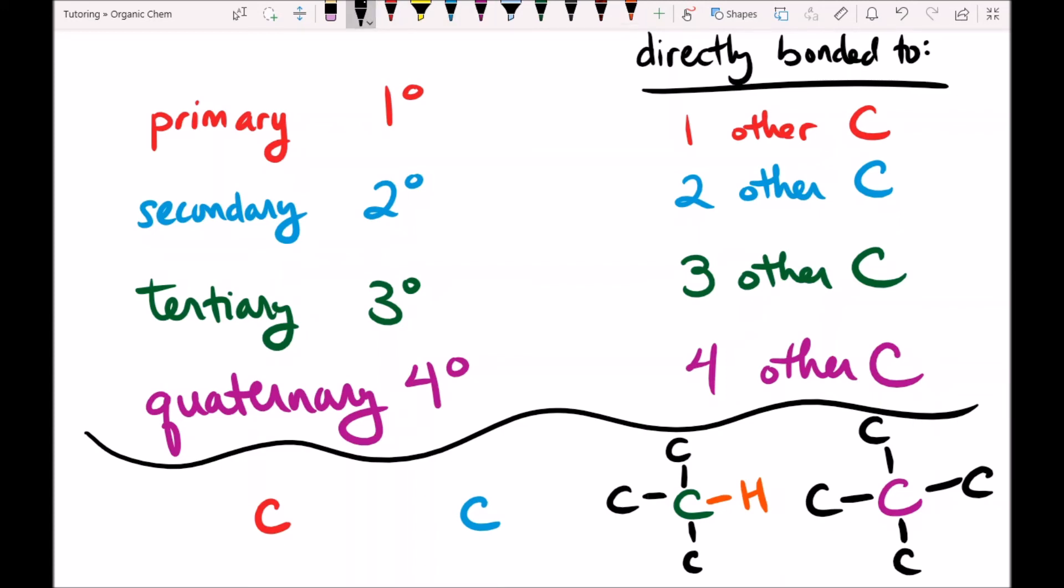Our secondary carbon is bonded to two other carbons. And then its other two bonding possibilities are devoted to other atoms besides carbon. And finally our primary carbon is bonded to one other carbon and then three other things.